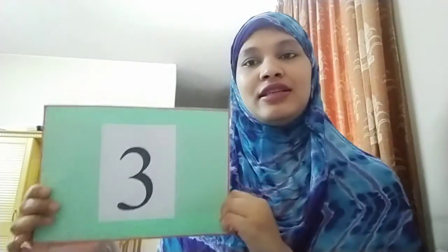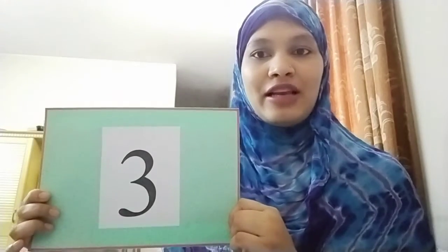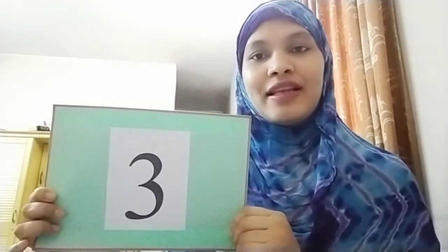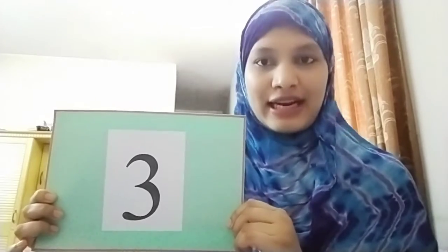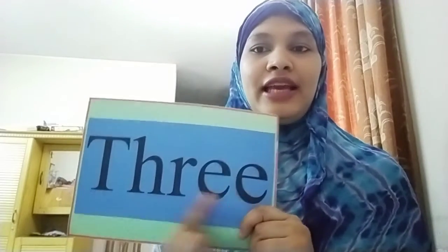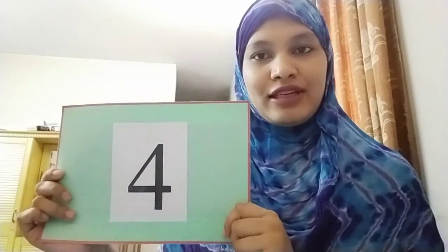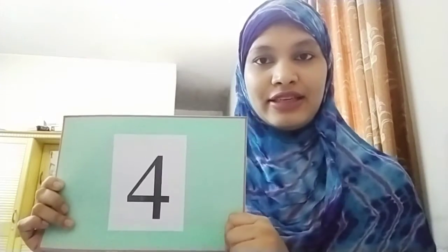Now, next one is three, right? What is the spelling of three? Very good. T-H-R-E-E, three. T-H-R-E-E, three. Next one is four. Now, say the spelling. Did you remember? F-O-U-R, four. F-O-U-R, four.